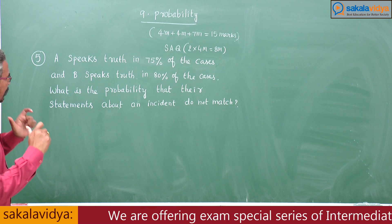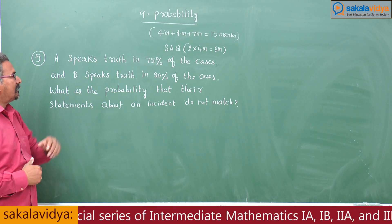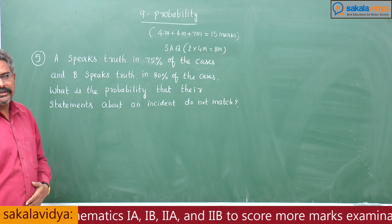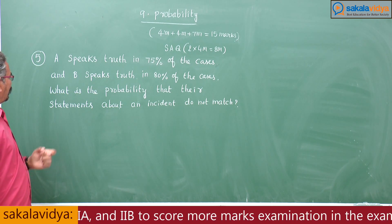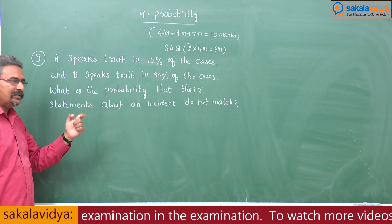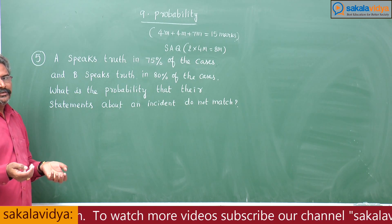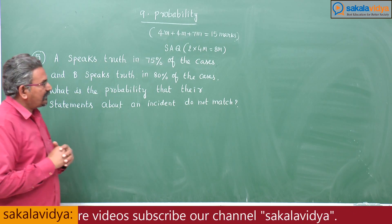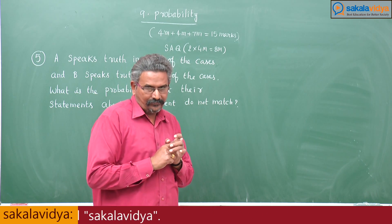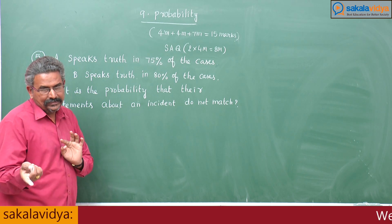If any incident is there, A speaks truth in 75% of the cases whereas B speaks truth in 80% of the cases. Their statements do not match means they contradict each other. If A speaks truth, B speaks lie. If A speaks lie, B speaks truth. These are the two cases we have to consider.